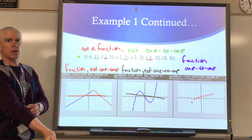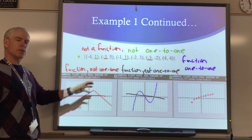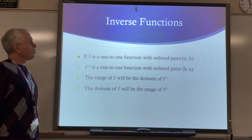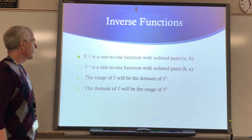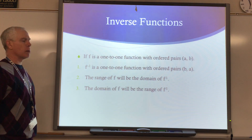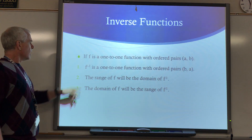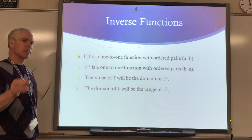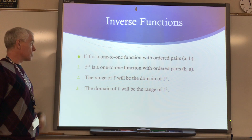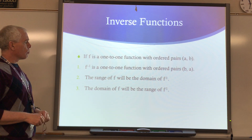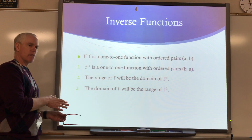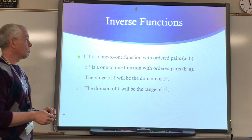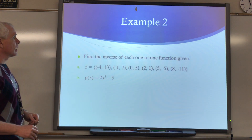So that's how we determine functions and one-to-one. Functions we've talked about before; one-to-one is a new topic here. Inverse functions: if F is a one-to-one function with ordered pairs A and B, then F inverse is also a one-to-one function with ordered pairs B, A. We switch around the domain and range. The range of F will become the domain of F inverse, and the domain of F will become the range of F inverse. They swap domains and ranges, and that will be important for the math we're looking at.